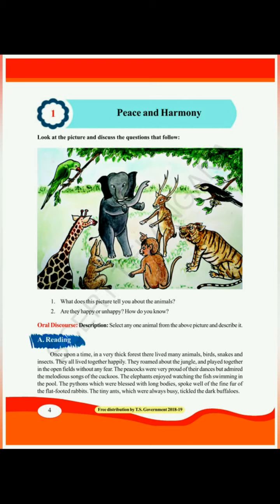Once upon a time there was a thick forest — thick forest means a dense forest with many trees. In that thick forest, many animals, birds, snakes and insects lived together happily. They roamed about the jungle and played together in the open fields without any fear. The animals, birds, snakes and insects were not afraid of each other — they all played and roamed together in the jungle.